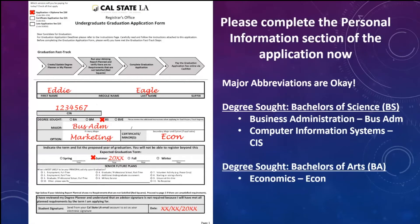This is the first page of the graduation application form — it's a very simple form to fill out. On the top left corner, you'll see 'Application plus diploma fee $30' — that's what you would check. If you're submitting past the deadline, you would also check the late application fee. Then you fill in your name and CIN. An important part that many people get wrong: are you BA or BS? Look at the right side of the page. A BS — Bachelor of Science — is for either Business Admin or CIS majors, so if you are either of those two, you select BS.